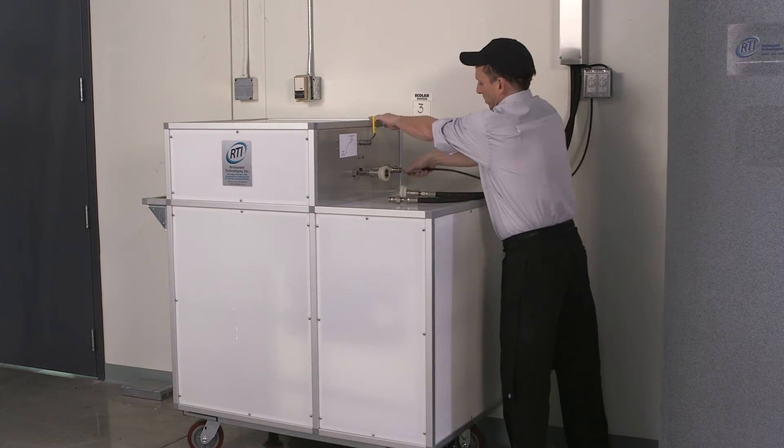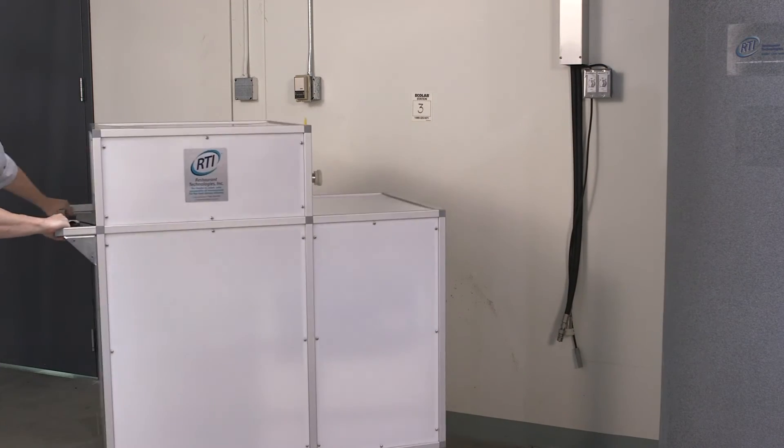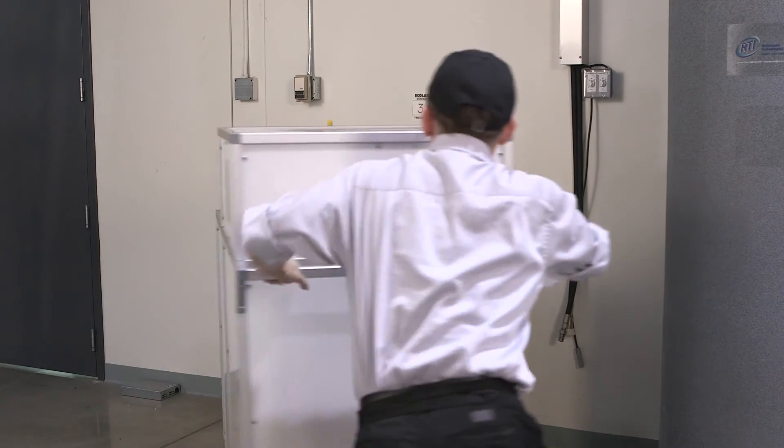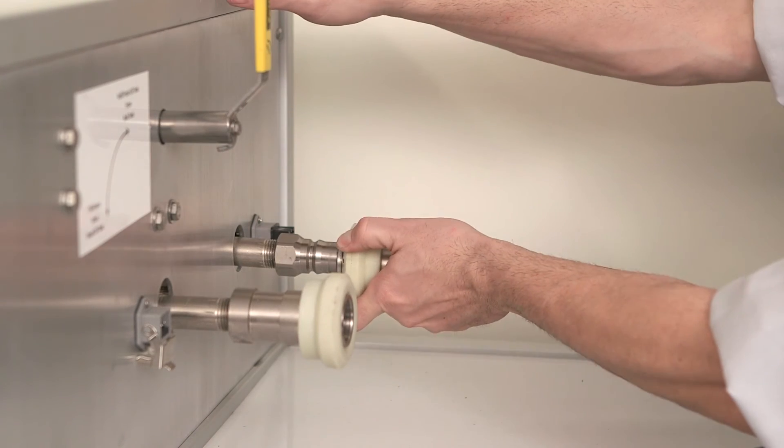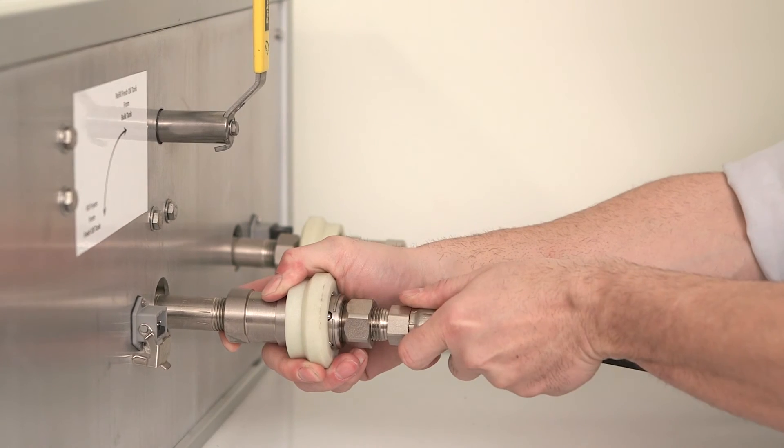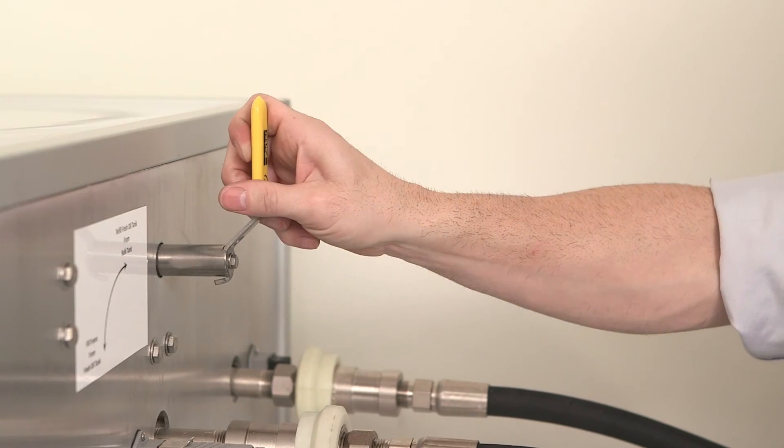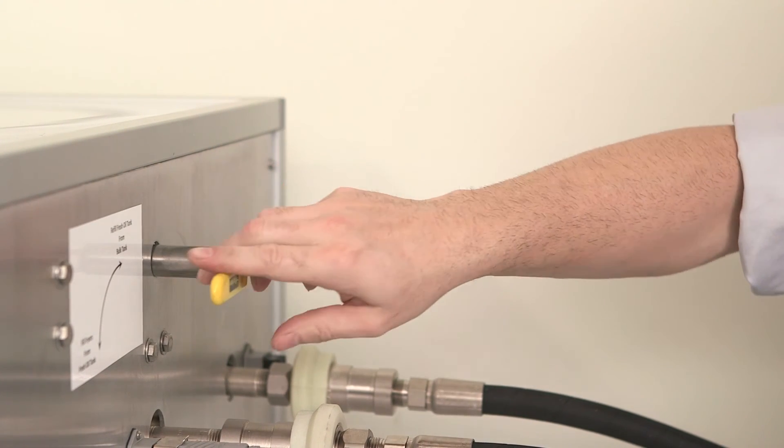Disconnect the hoses and power cord and transport the unit to its parking space near the kitchen. At the parking space, connect the fresh oil hose, the used oil hose, and the power cord to the unit and turn the handle to fill fryers.